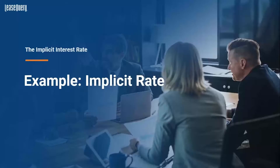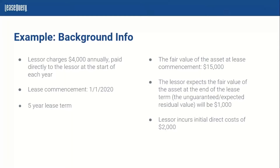Now we want to look at an example. We're going to utilize Excel using its internal rate of return, or IRR, function with some background information. For our example, assume these facts: the lessor is charging the lessee $4,000 annually, and this payment is made directly to the lessor at the beginning of each year. The lease starts on January 1st, 2020, and it is a five-year lease term.